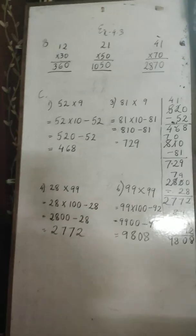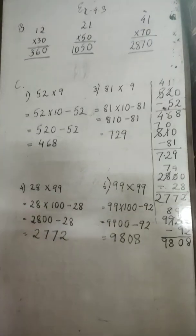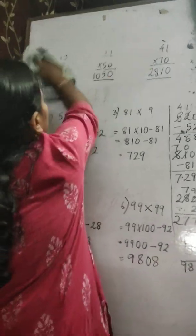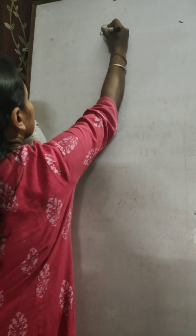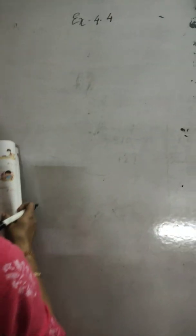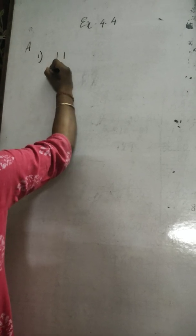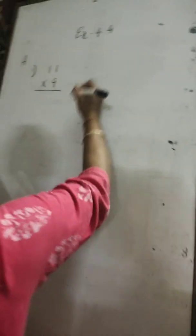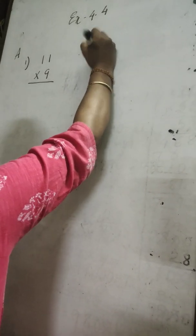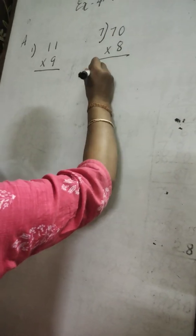Now the next exercise — Exercise 4.4. Here I will show you how to multiply with a one-digit number. You must know the multiplication table to work out these multiplication sums.